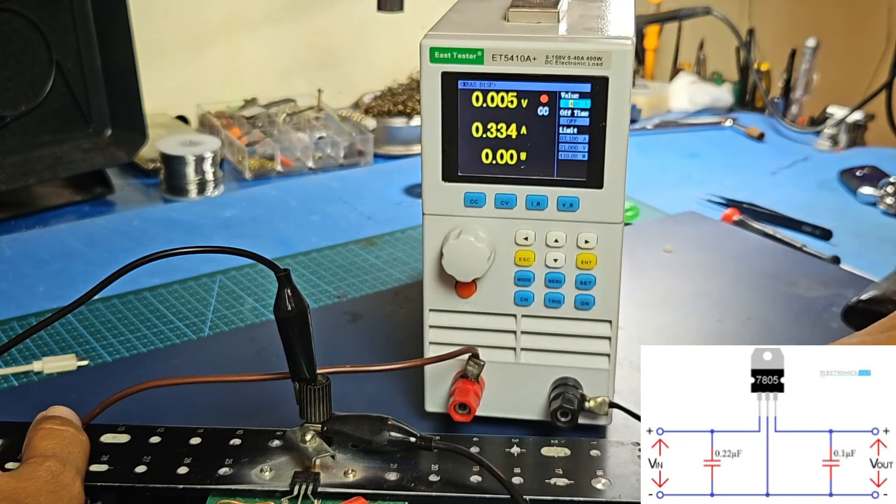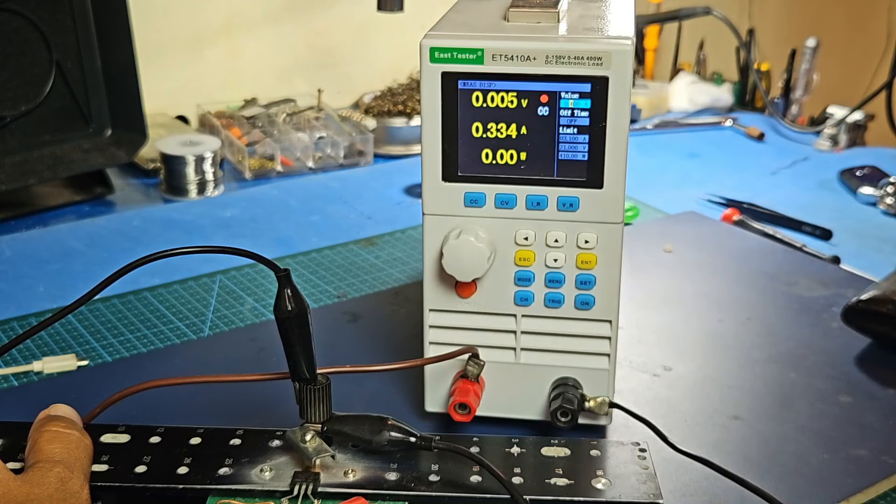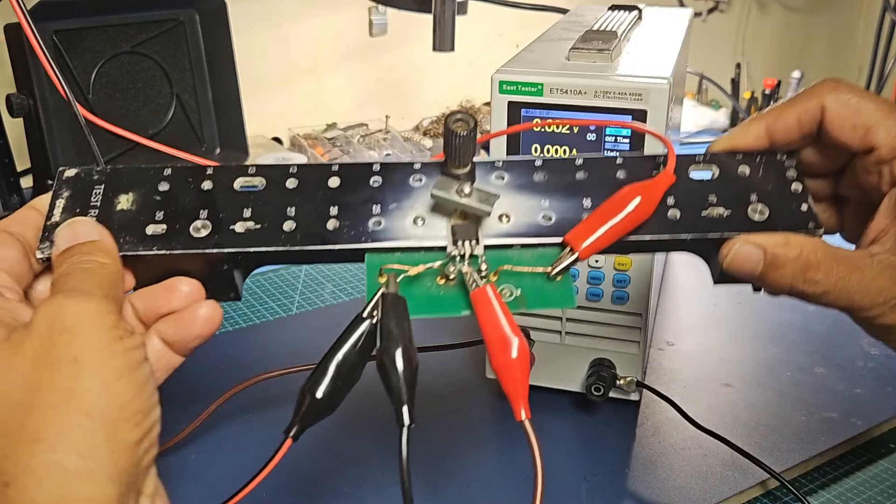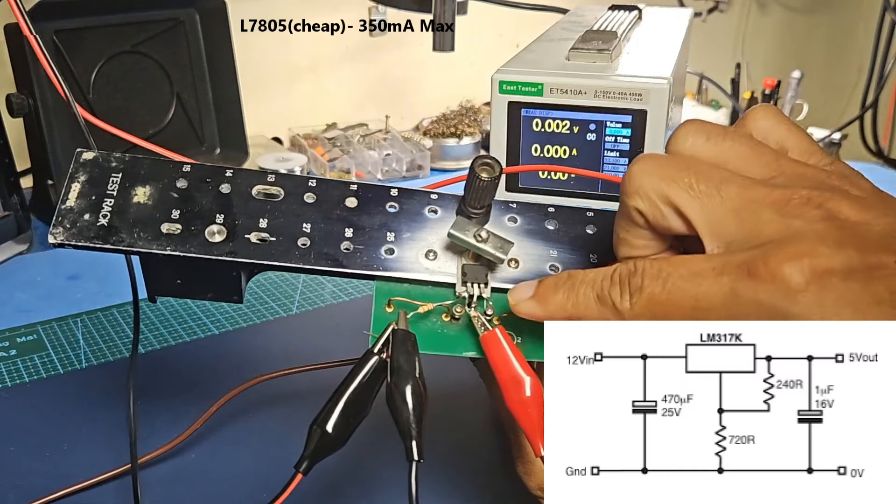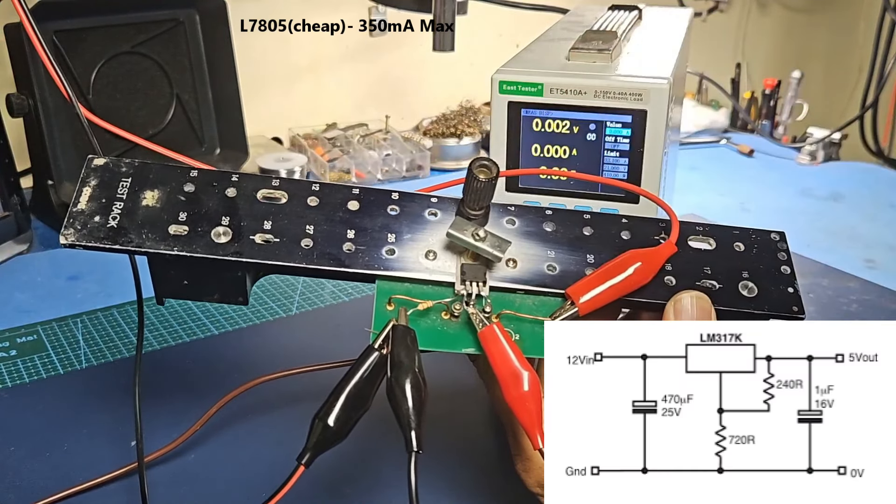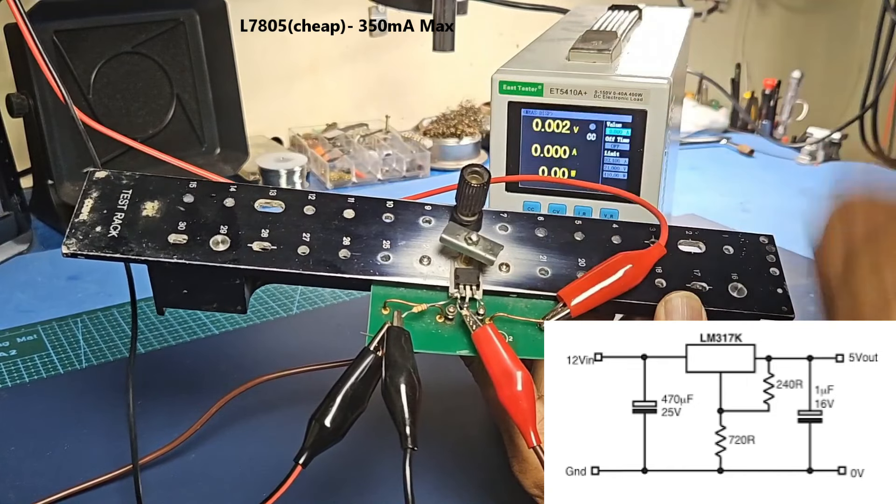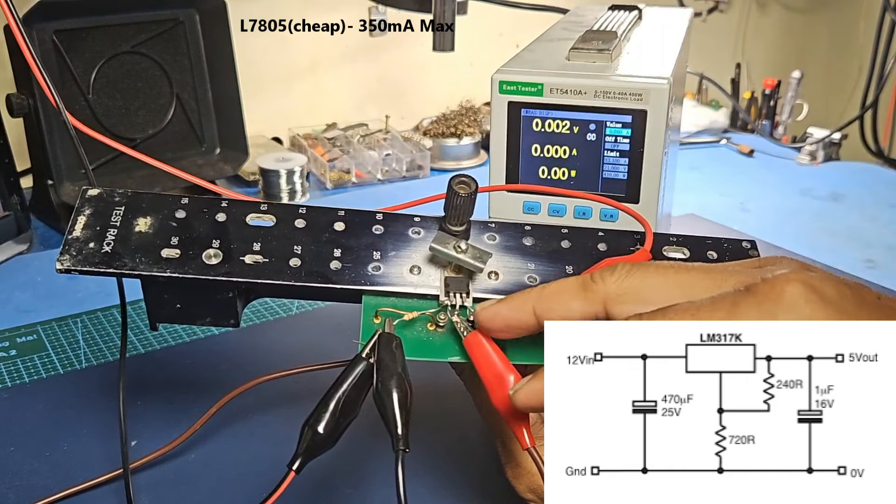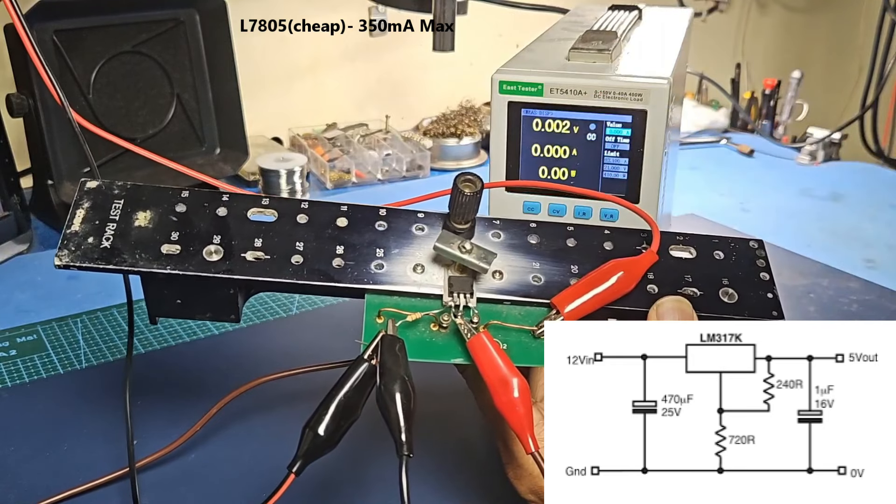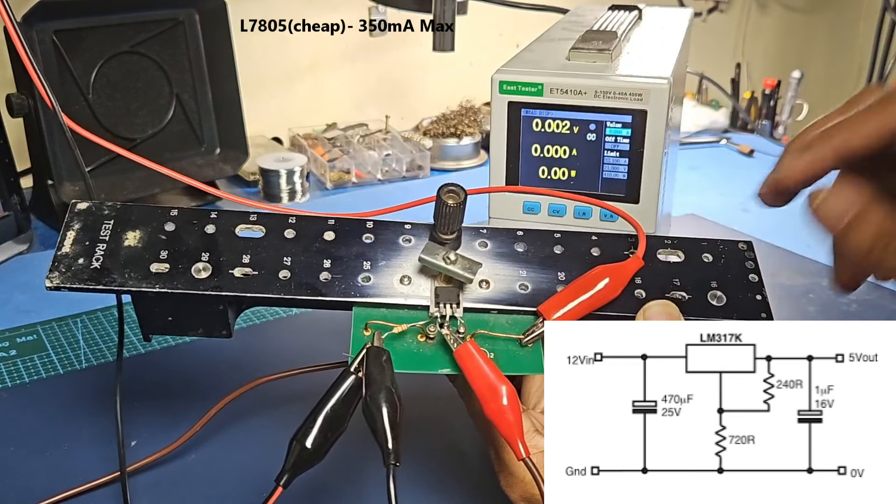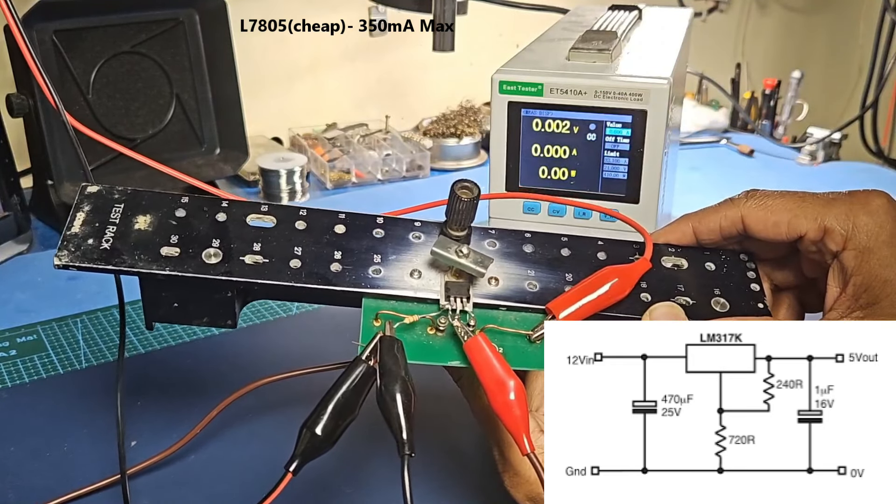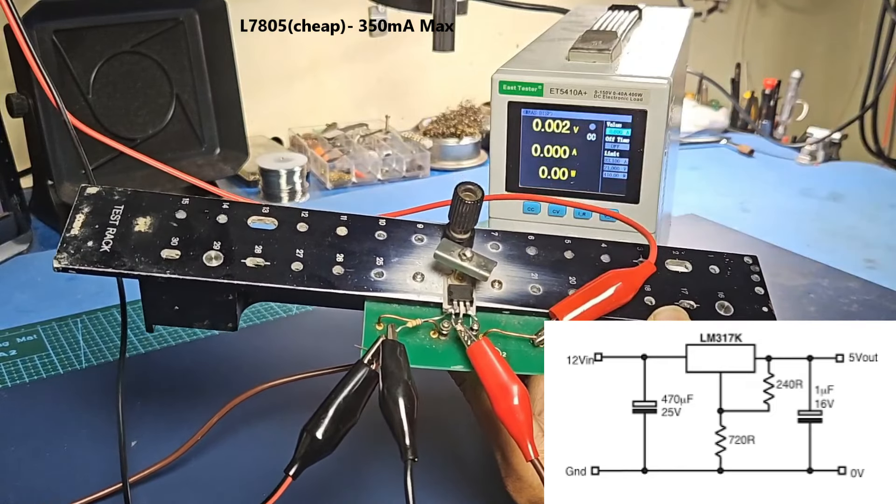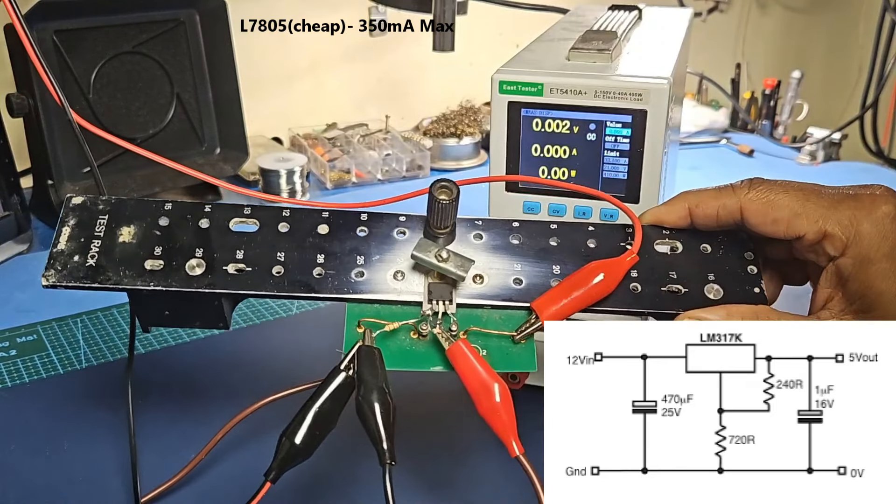At 335mA the input voltage is showing. The output is around 5V but dropping to 4.7V. Now let's test the LM317.